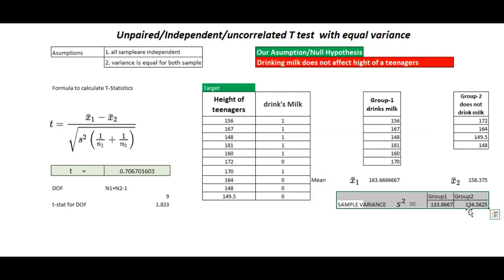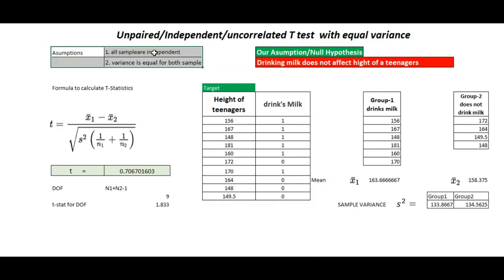These types of problems are named unpaired, independent, or uncorrelated t-test with equal variance. The assumptions are: all samples are independent, and variance is equal for both samples. To calculate the t-statistic, we find the mean of the first group minus the mean of the second group, divided by the square root of the sample variance multiplied by (1/n1 + 1/n2), where n1 and n2 are the sizes of each group. Applying this formula to our data gives a t-statistic of 0.7067.